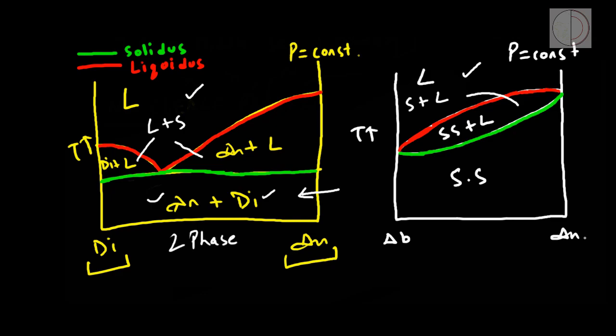In the solid solution series, below the solidus only one phase is stable — a solid solution between albite and anorthite. This is because in the albite-anorthite system, complete solid solution can occur, and hence at lower temperatures they intermix and form one phase. While in the diopside-anorthite system, no solid solution can occur, and hence below the solidus they form separate diopside and anorthite phases.